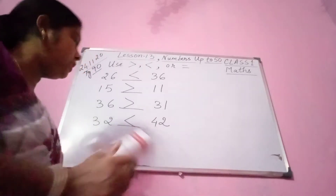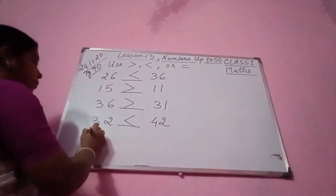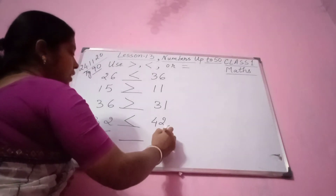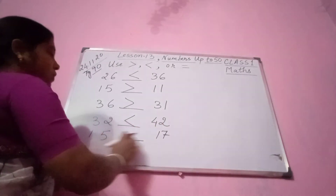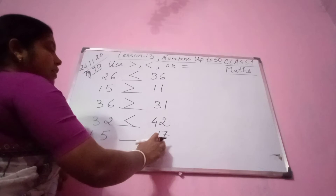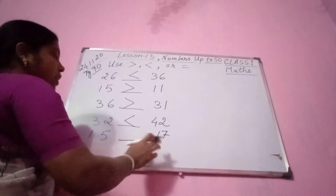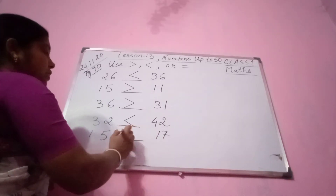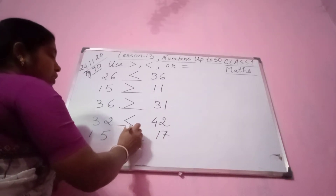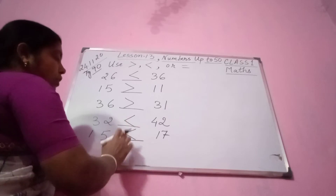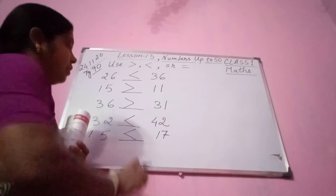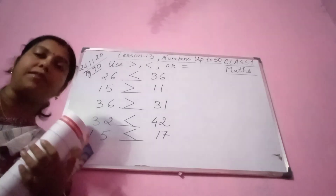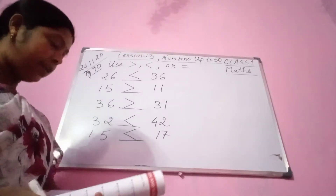Next number — 15 and 17. 15 is 1 ten, 5 ones. 17 is 1 ten, 7 ones. So 15 is smaller than 17. You please put this sign — this sign is a smaller sign. 15 is smaller than 17.